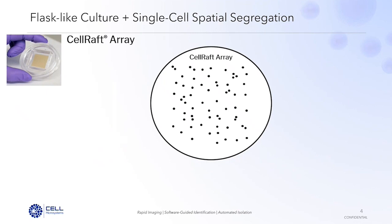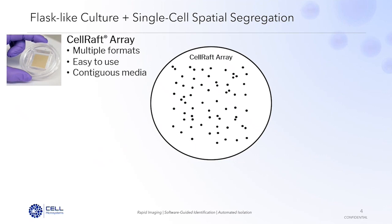Today I'm going to talk about our technology, the Cell Raft Array. One way we overcome the viability decrease is through the consumable itself. Using the Cell Raft Array, we enable a flask-like culture environment while allowing for single cell spatial segregation. The array is available in multiple formats, it's incredibly easy to use, and the form factor will be very familiar if you've ever seeded a standard tissue culture dish. Most importantly, the cells all share a contiguous media volume within the central reservoir. When you seed your cells into the Cell Raft Array, they're all sharing a media volume, allowing for crosstalk between cells and overall better viability and survival.